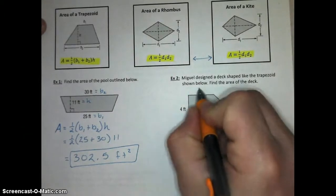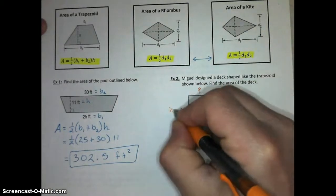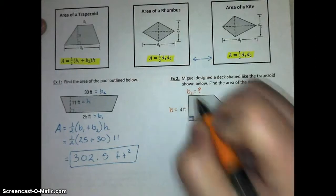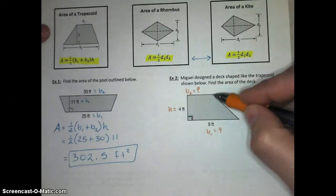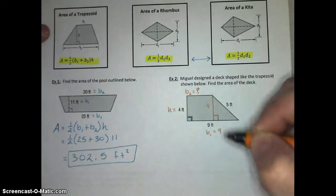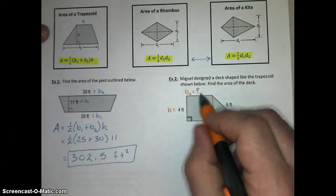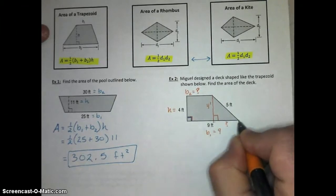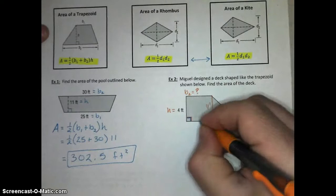If you look at this, there's one key piece of information that we need to know before we can actually plug this in. We know the height is 4, since that's a right angle. We know base 1 is 9. We need to know base 2. If this is a right angle, I could come over here to this side of base 2 and draw another altitude, or height, that's perpendicular to that side, which is 4 feet. That separates this into a rectangle and a triangle.